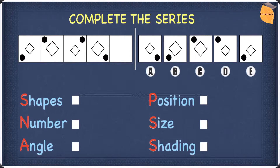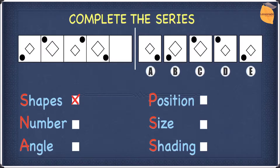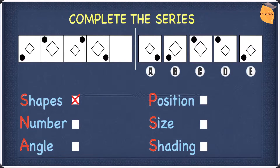First, we're going to look at the shapes. We have a diamond and a circle, and no new shapes are introduced, so shapes does not work and we can cross it off. In terms of number, we have the same number of shapes throughout — two — one circle and one diamond. The number doesn't increase or decrease, so number doesn't work either.